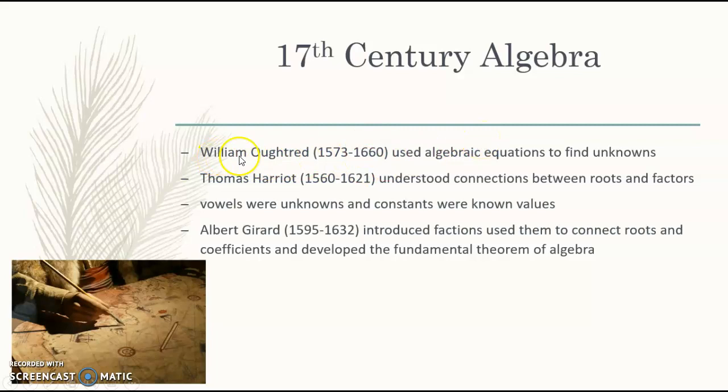Moving on to 17th century algebra. We have William Oughtred, who used algebraic equations to find unknowns. We also have Thomas Harriot, who was a cartographer, which means he was a mapmaker. He understood the connections between roots and factors. We also have that vowels were unknowns and constants were known values. As well as Albert Girard, who introduced fractions and used them to connect roots and coefficients and developed a fundamental theorem of algebra, which helped us realize that the number of roots equals the degree of the polynomial.